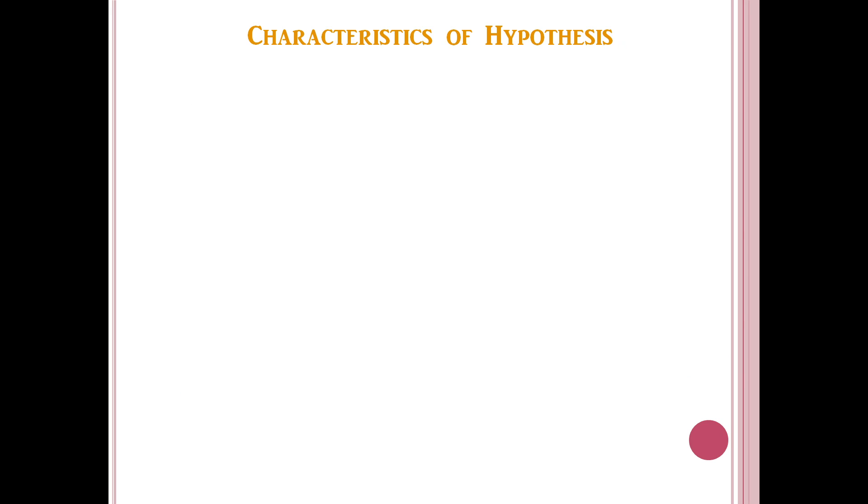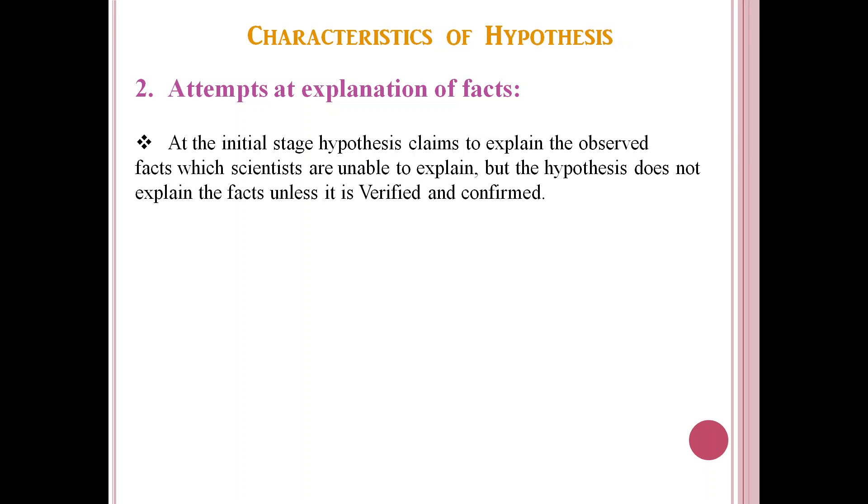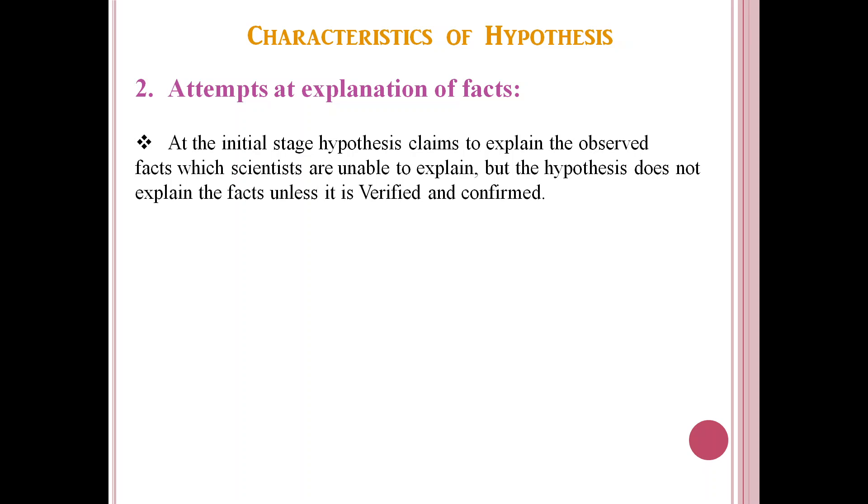Now, second characteristic is that hypothesis attempts at explanation of facts. You know that at the initial stage, hypothesis claims to explain the observed facts which the scientists are unable to explain. But the hypothesis does not explain the facts unless it is verified and confirmed. We know that on the basis of this possible explanation only the investigator proceeds to collect data through his observations and may perform an experiment to verify it. Thus, the hypothesis becomes an explanation to the problem once it is confirmed.